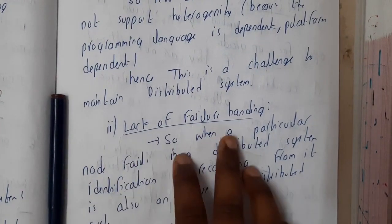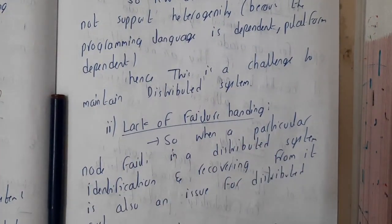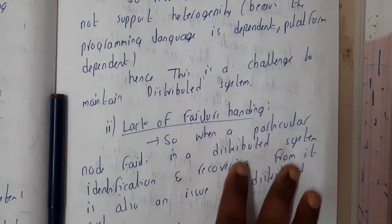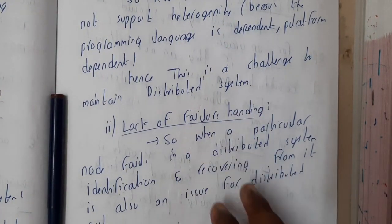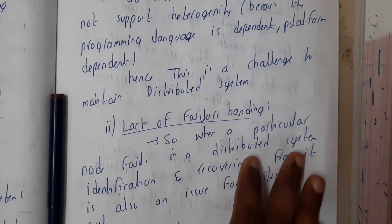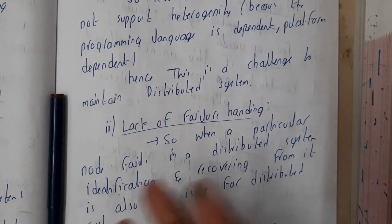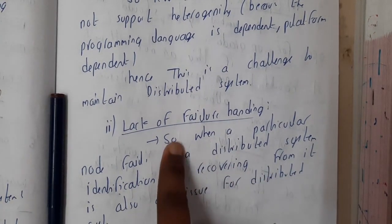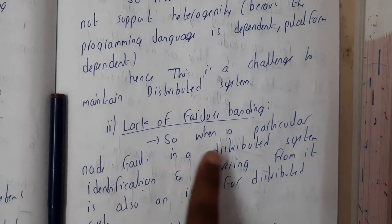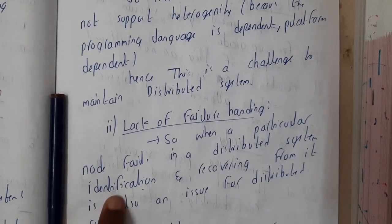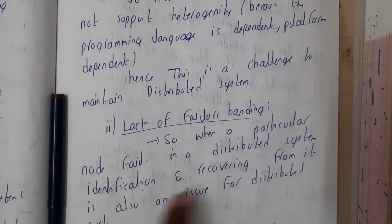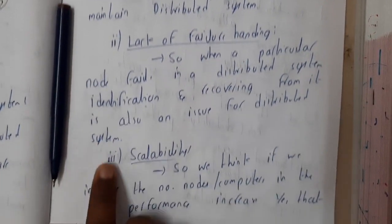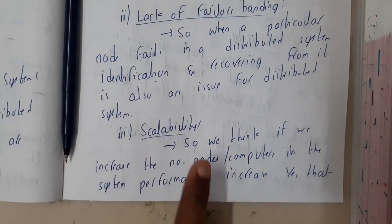Similarly, lack of failure handling is another challenge. To handle a failure, you need to know where the issue has occurred. When it comes to small distributed systems, you can identify it, but when it comes to large or huge systems, it is difficult to find. When a particular node fails in a distributed system, identification and recovery for it is also an issue.